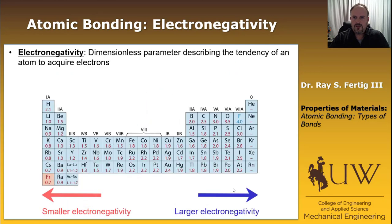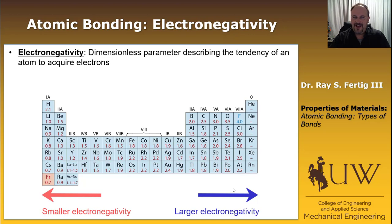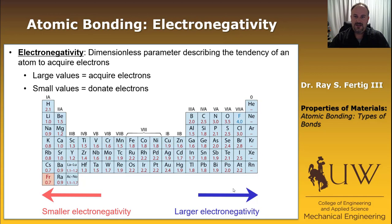Now we have the same chart but with numbers attached — the electronegativity of each element. Electronegativity is a dimensionless parameter that describes the tendency of an atom to acquire electrons. Large values of electronegativity mean that the element will likely acquire electrons; small values mean it typically donates electrons. On the left-hand side you see smaller electronegativities, on the right-hand side you see larger electronegativities. As we talk about covalent and ionic bonds, those quantities become important.